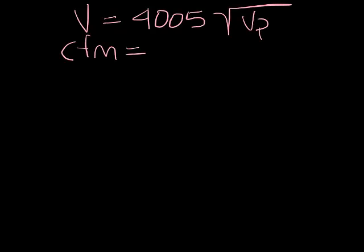Now knowing the velocity and area of the ductwork, we can calculate air flow, which is CFM equals the area times the velocity.